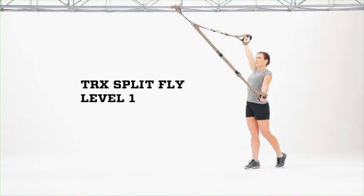TRX Split Fly Level 1. Adjust the suspension trainer to mid-length, stand facing the anchor point, feet in an offset foot position.